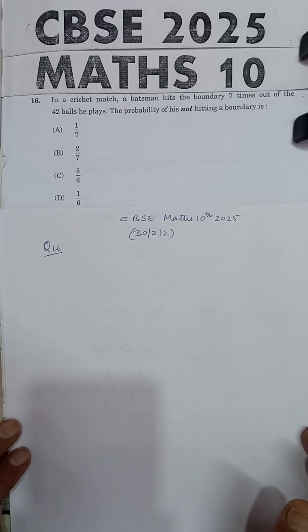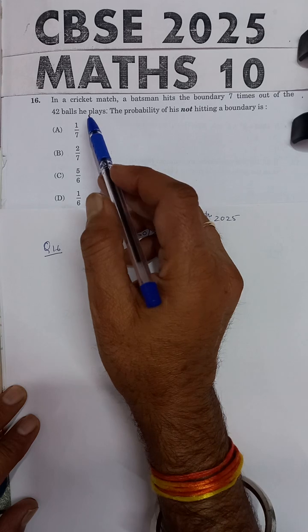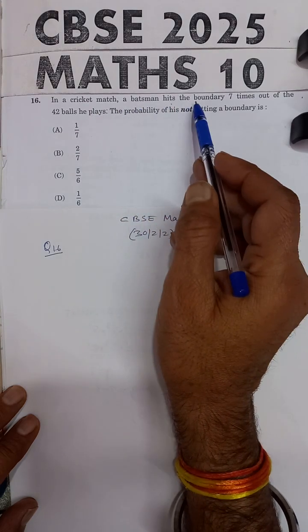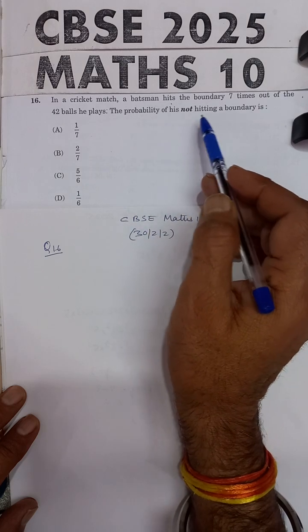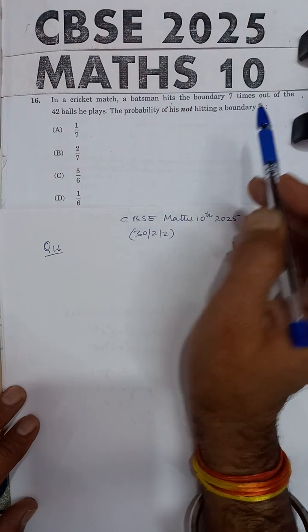This question is from CBSE Maths 10, 2025 Board Examination. The statement of the problem says: In a cricket match, a batsman hits the boundary 7 times out of 42 balls he plays. Find the probability of his not hitting a boundary.